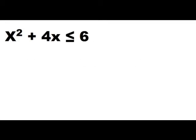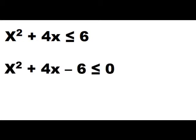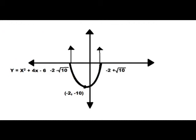We want to solve for x squared plus four x less than or equal to six. We just move the six over so we have it equal to zero, then shade everything that's less than zero. That's easy.